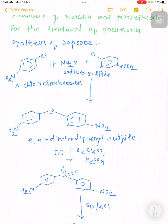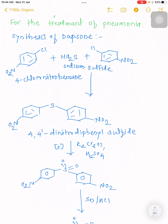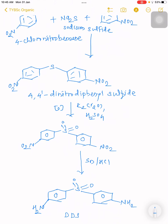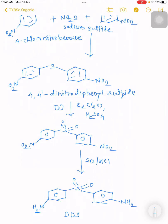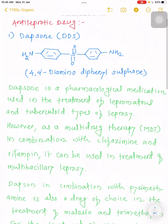In the final step, the two nitro groups are reduced to amino groups using tin in acidic conditions. This gives us dapsone — the final compound with NH2 groups on both phenyl rings attached to the sulfone. So in the first step, two molecules of 4-chloronitrobenzene react with sodium sulfide to give 4,4'-dinitrodiphenyl sulfide. Oxidation with potassium dichromate converts the sulfide to the sulfone, and final reduction of the nitro groups to NH2 gives dapsone, an antibacterial compound belonging to the class of aromatic sulfones.